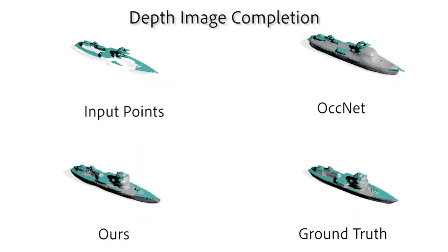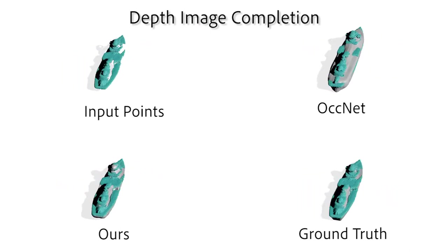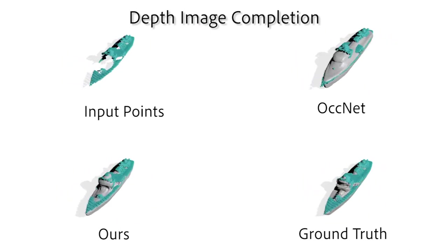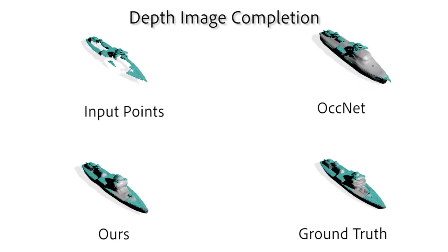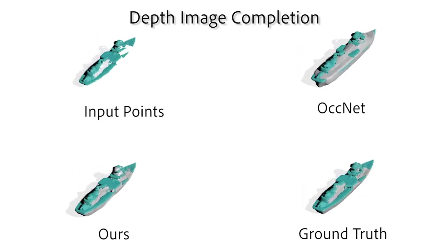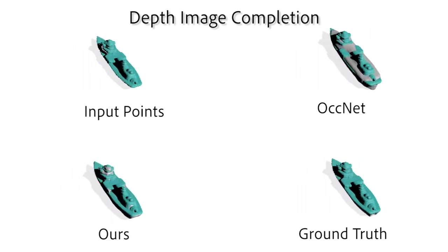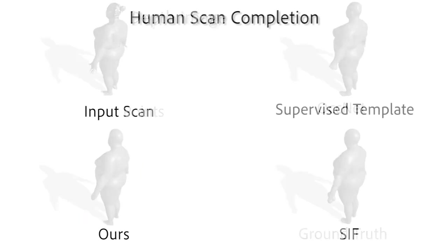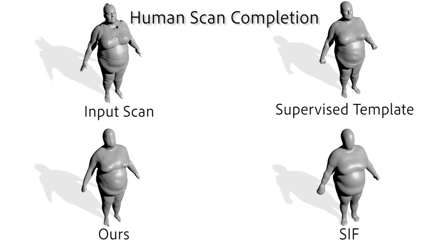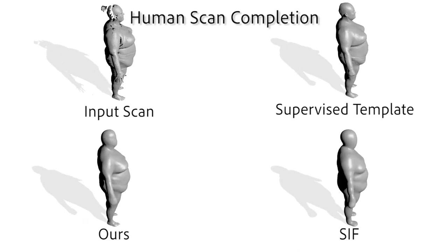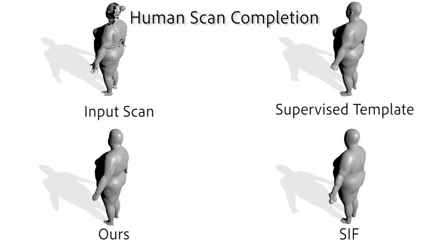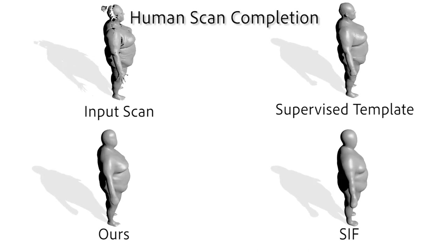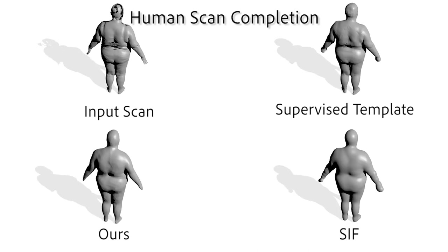Here we show results on posed depth image completion. The input posed depth image is shown as green points, while the reconstruction is in gray underneath. This experiment shows improvements of over 15 points in F-score. While not as detailed as domain-specific templates, which require manual design and keypoint labeling, LDIF improves over existing unsupervised methods for fitting real scans of humans.